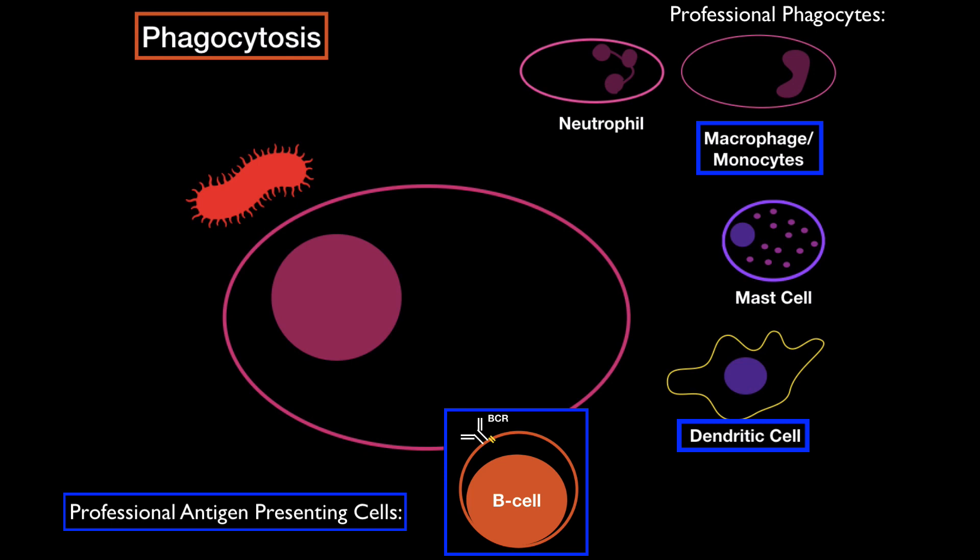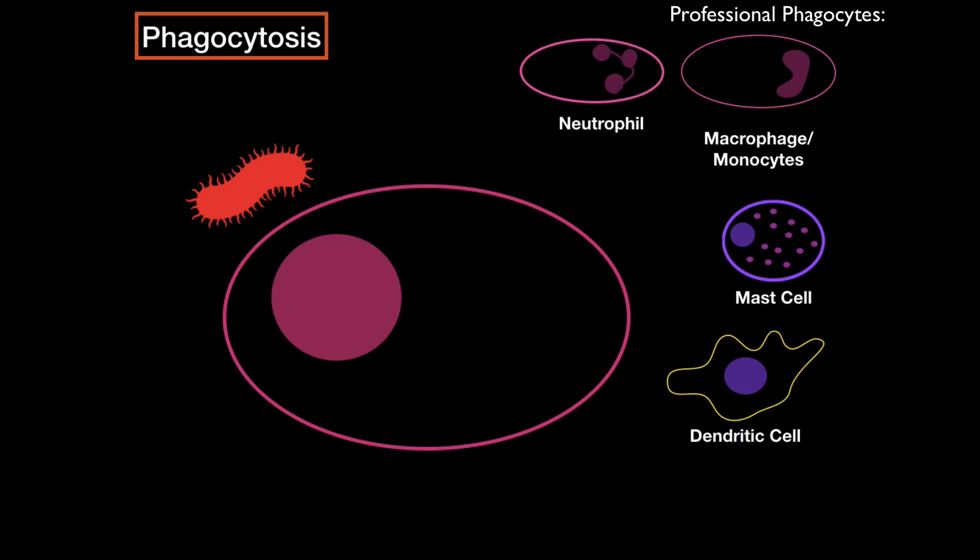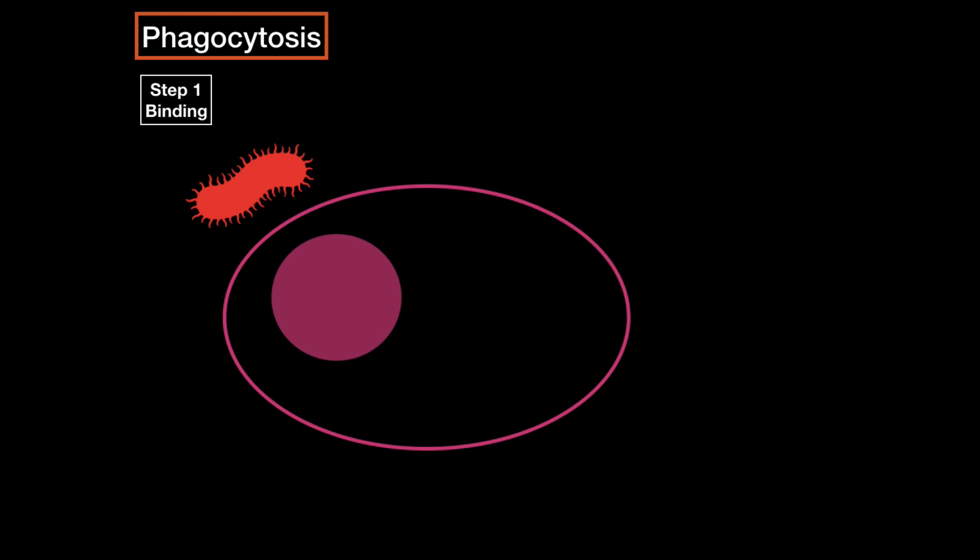But just in case to not confuse you, B cells are also what we call professional antigen-presenting cells. But B cells don't actually phagocytose, they do receptor-mediated endocytosis, since they have receptors on their surface. So these right here in front of you, these are professional phagocytes. Alright, so let's get back to phagocytosis.